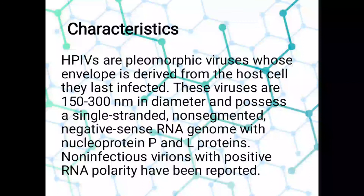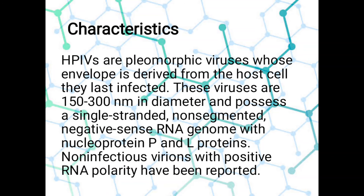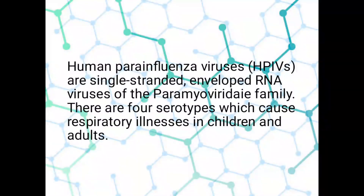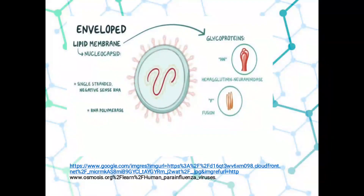What are the characteristics of this virus? The viruses are pleomorphic, whose envelope is derived from the host cell they last infected. These viruses are 150 to 300 nm in diameter and possess a single-stranded, non-segmented, negative-sense RNA genome with nucleoprotein, NP, and L proteins. Non-infectious variants with positive RNA polarity have been reported. Human para-influenza viruses are single-stranded, enveloped RNA viruses of the Paramyxoviridae family. There are four serotypes which cause respiratory illnesses in children and adults. This is how the virus looks — its structure and characteristics are indicated in the diagram.